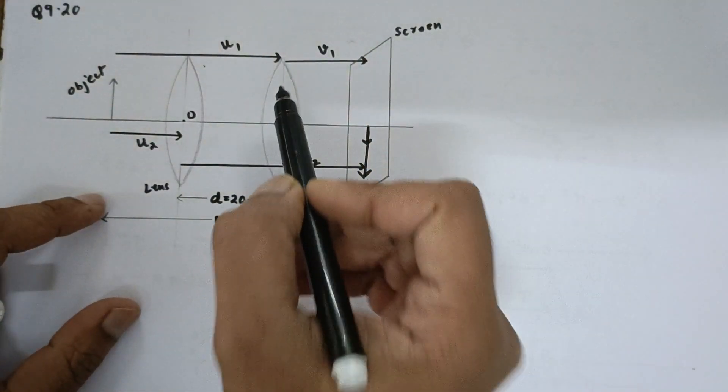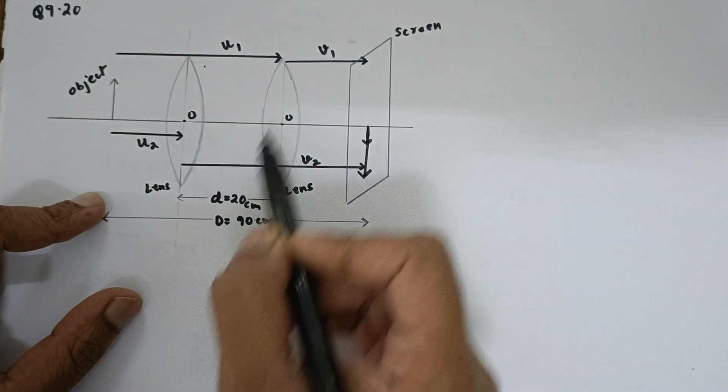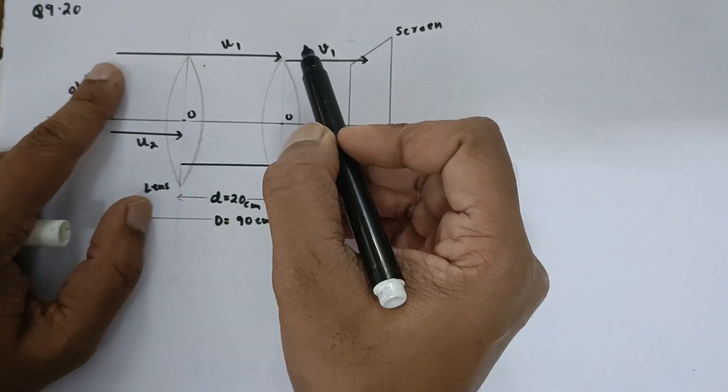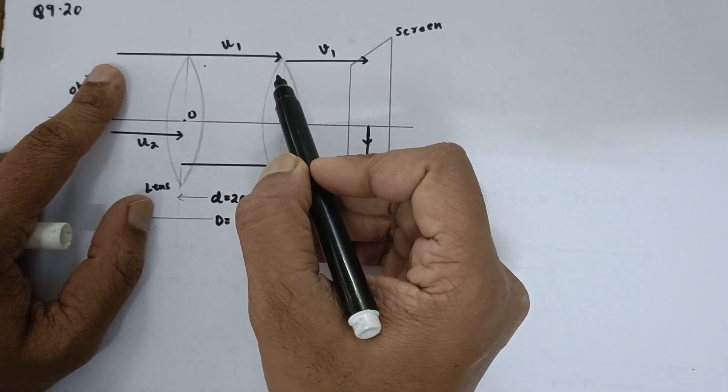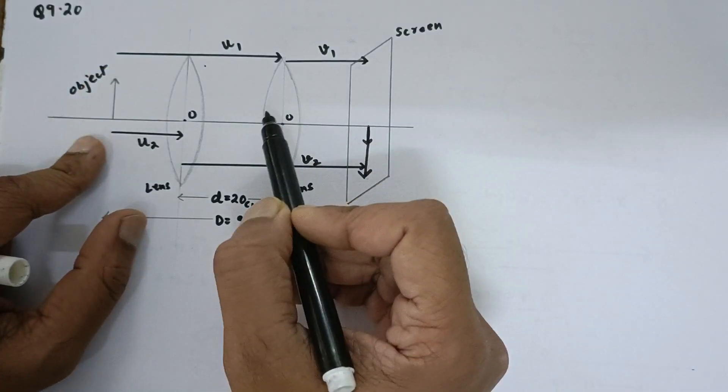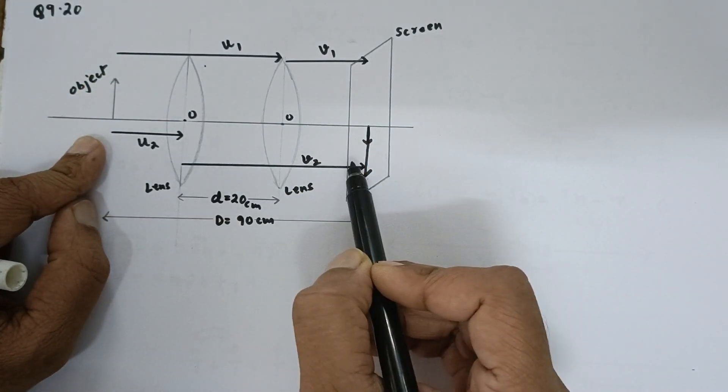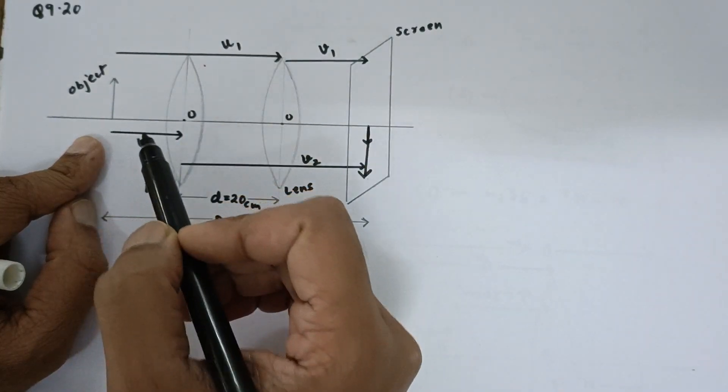Now, they have already given in the question that we are shifting this lens by 20 centimeters in this direction. So, for this lens position, this is the object distance, this is the image distance. For this lens position, this is the object distance and this is the image distance and these are interchangeable.